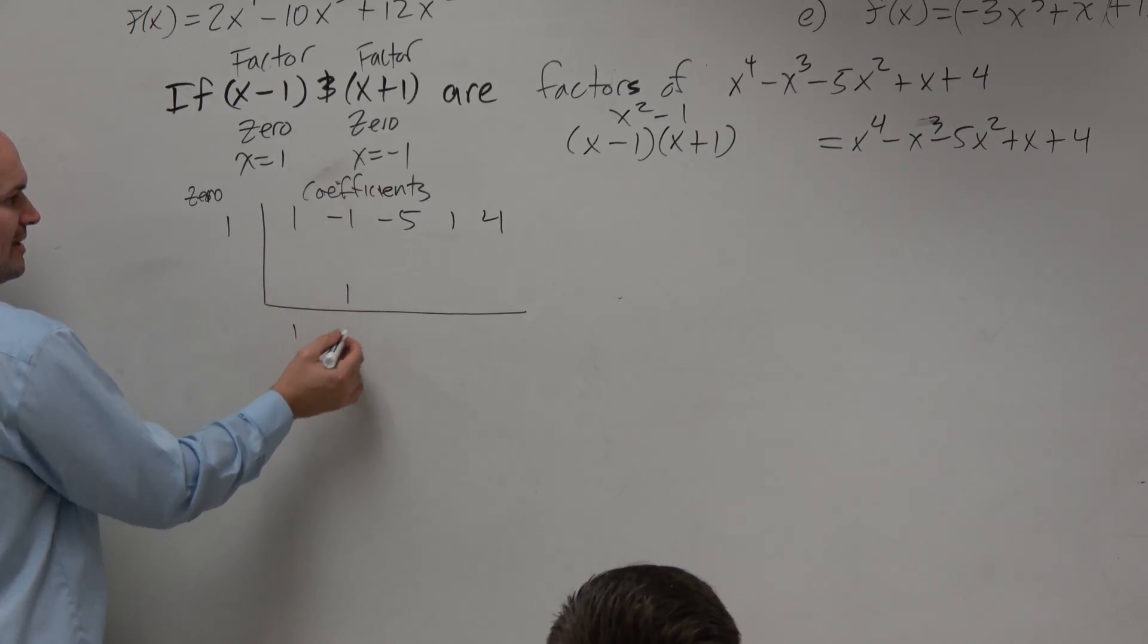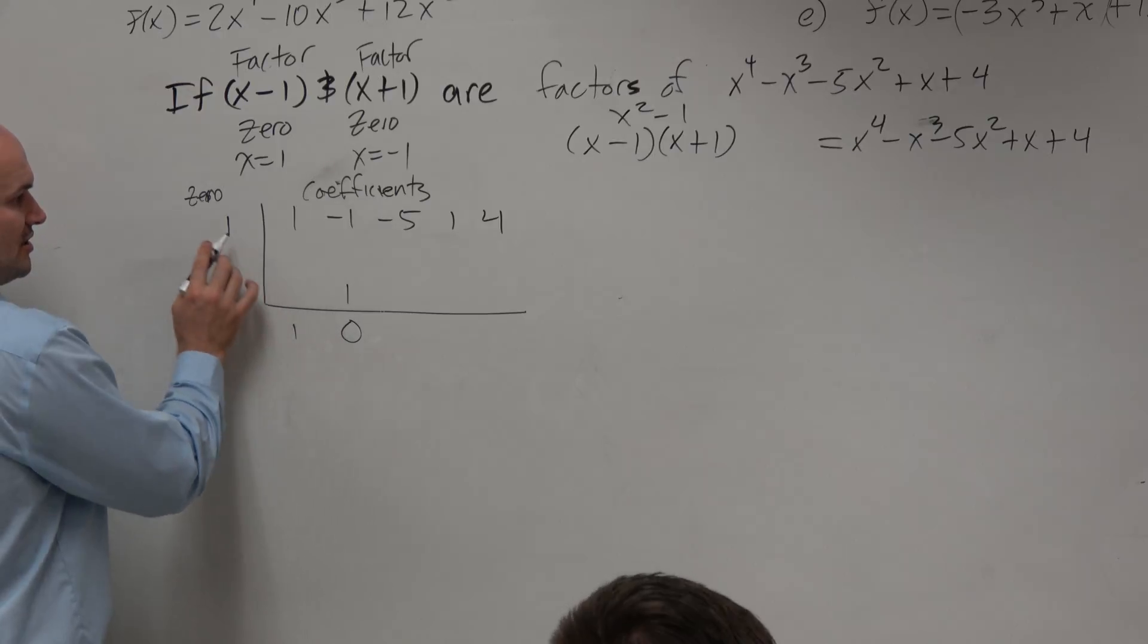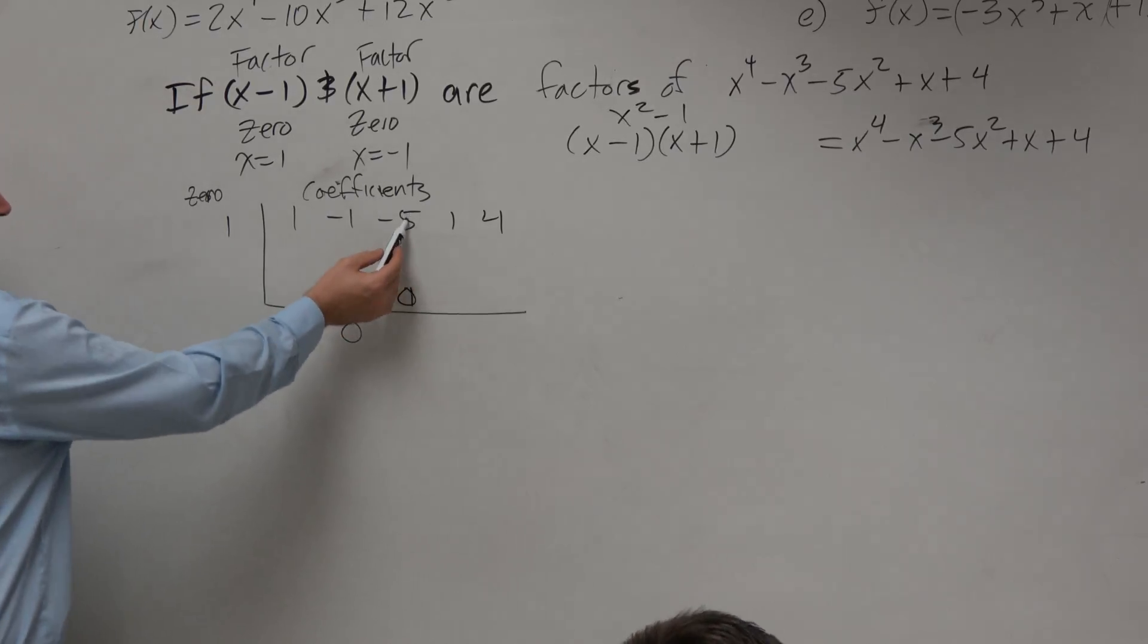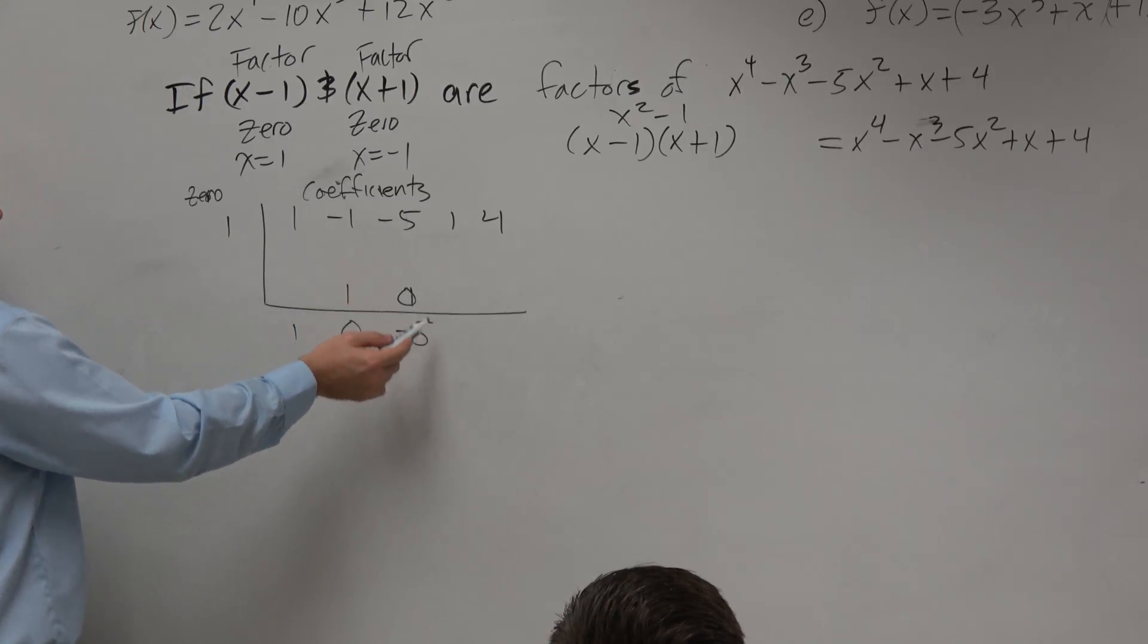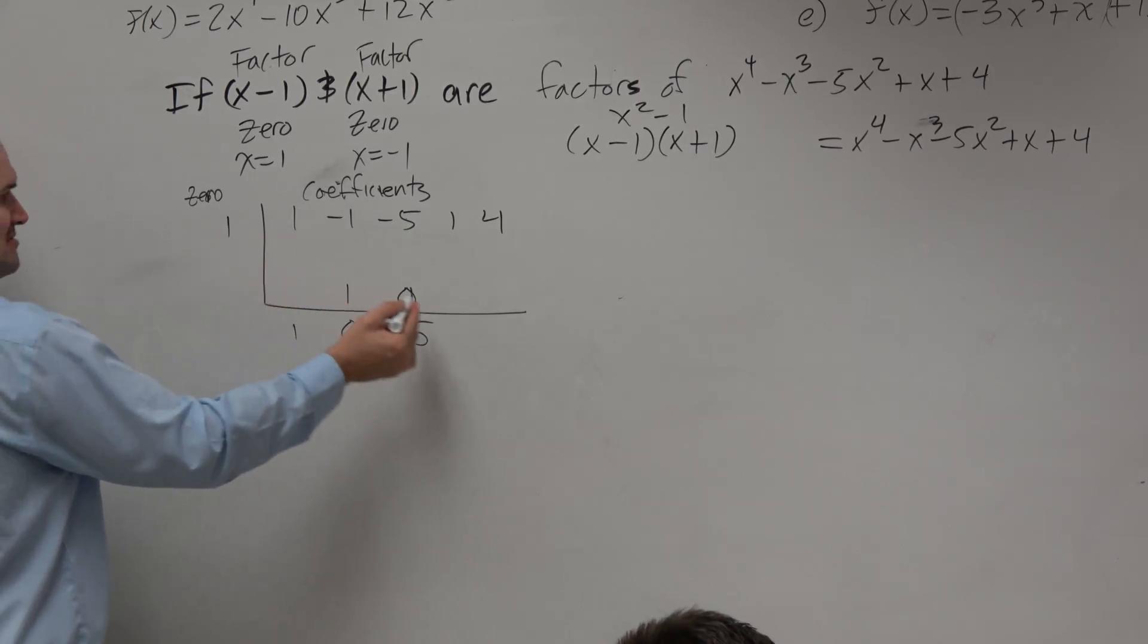Negative 1 plus 0 is 0. 0 times 1 is 0. Negative 5 plus 0 is negative 5. Negative 5 times 1 is negative 5.